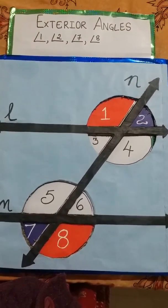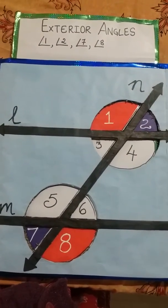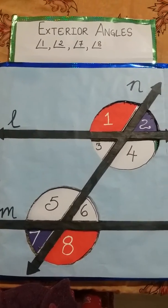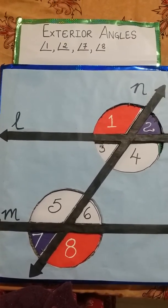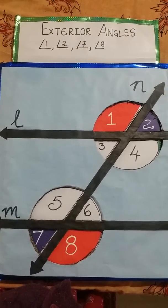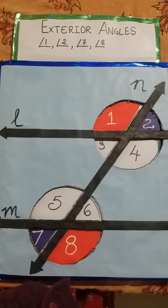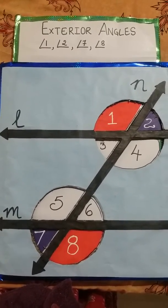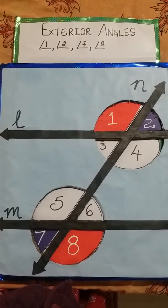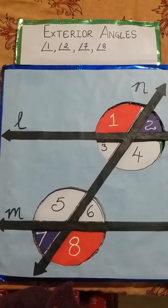Now we'll see exterior angles. The exterior angles are the outer parts of lines l and m — that is angles 1, 2, 7, and 8. The alternate exterior angles are shown with matching colors: the two red-colored angles and the two blue-colored angles. Those alternate exterior angle pairs are 1 and 8, and 2 and 7.